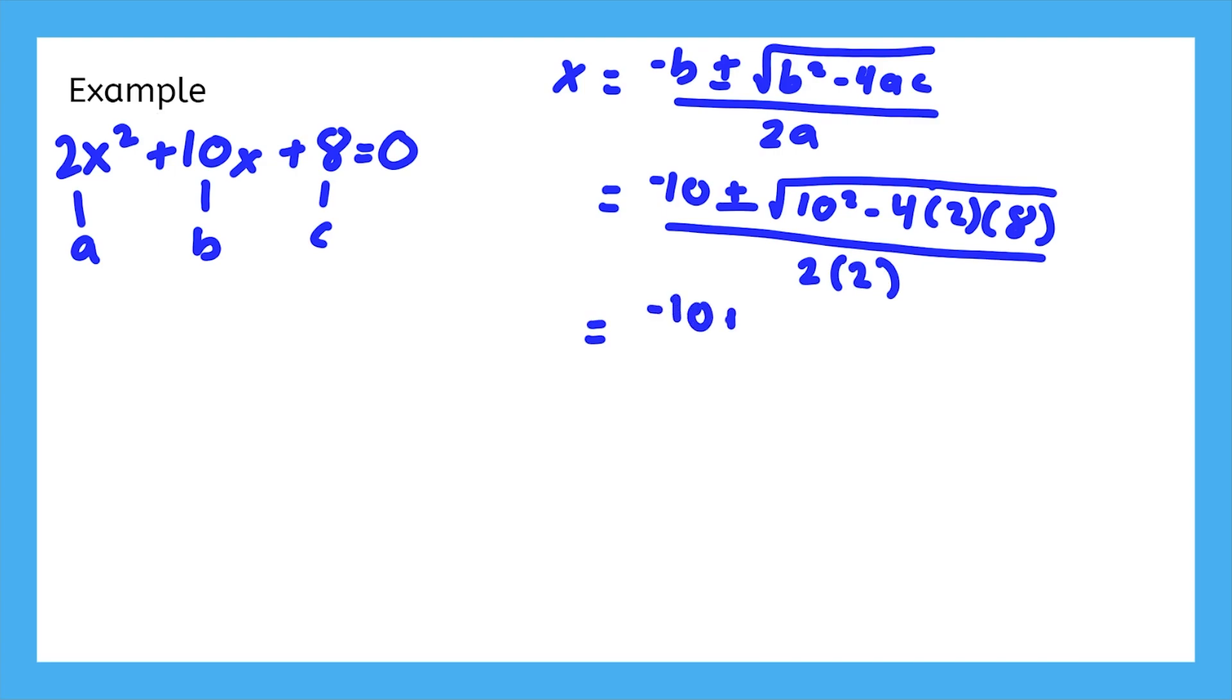Now we simplify to get the solutions. 10 squared is 100. Negative 4 times 2 is negative 8. 8 times 8 is negative 64. And 2 times 2 is 4. 100 minus 64 is 36, the square root of which is 6.